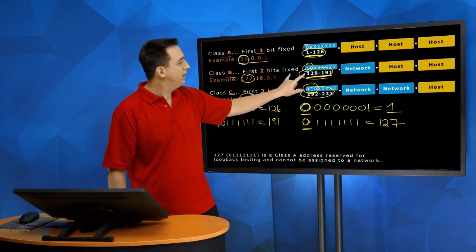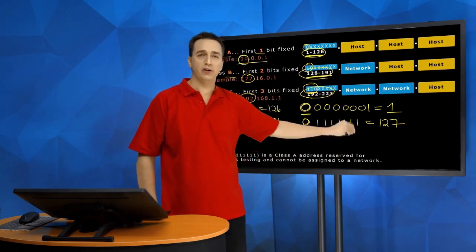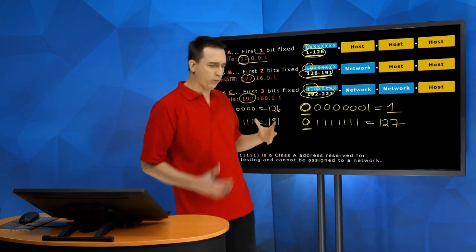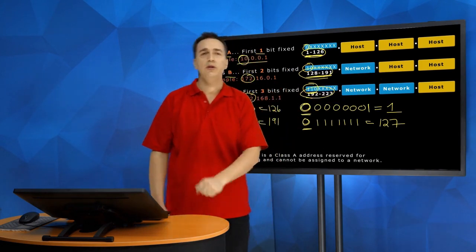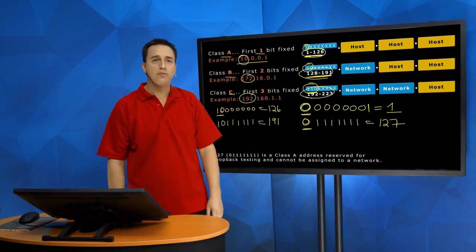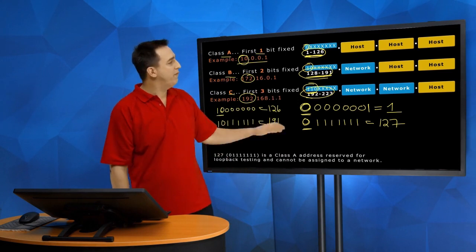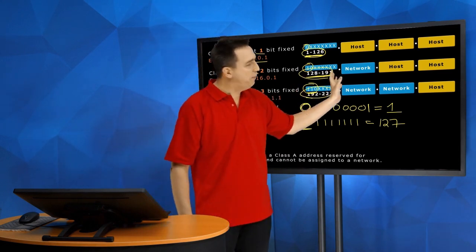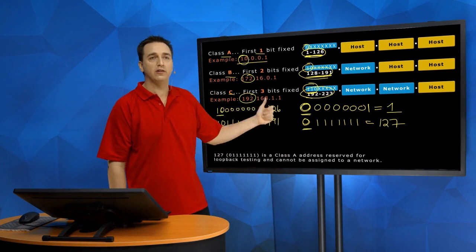With a Class B, you have the first two octets that are network. So your street name, as an example, if you're looking at a real-world scenario, and the host portion being much smaller. Only two octets. So you have a street with a medium-sized number of hosts when you compare it to a Class A.